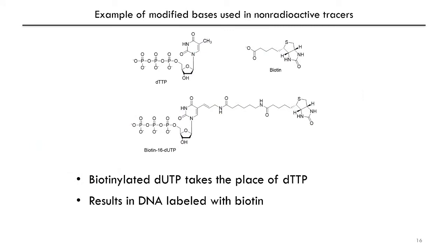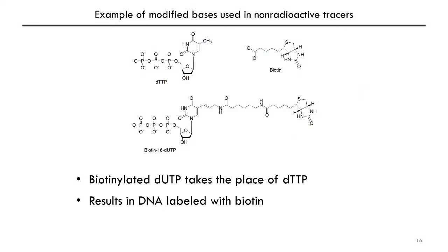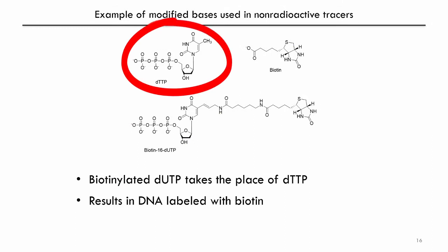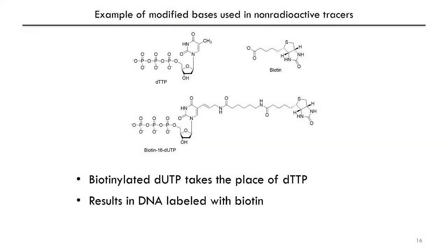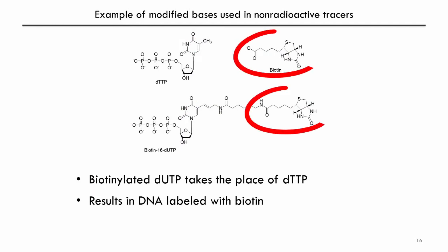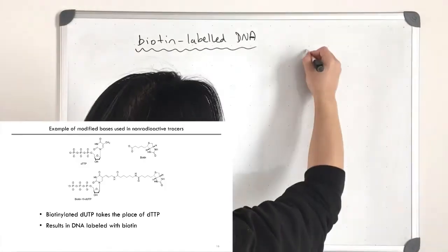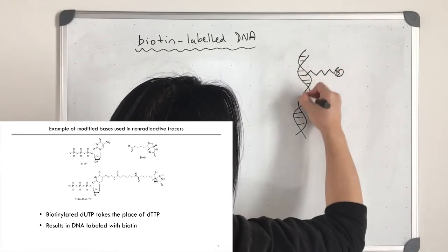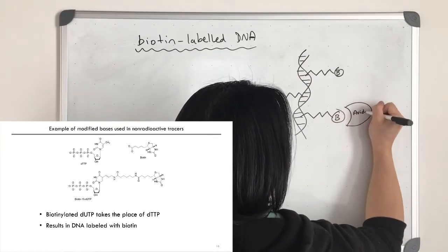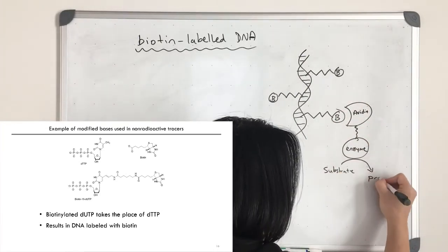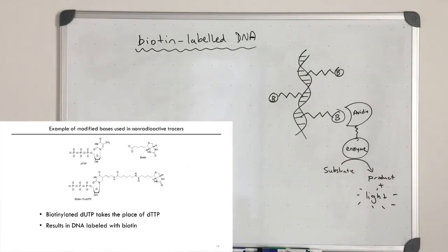This example uses biotinylated nucleotides to make a chemically labeled probe. You have a biotinylated nucleoside triphosphate replacing normal deoxythymidine triphosphate (dTTP) for the replication of DNA. This modified base still has the hydrogen bond acceptor and donor groups for normal base pairing, but attached is a biotin group. So if you PCR amplify DNA with this, you end up with a double-stranded DNA molecule with normal base pairing, but extending out from these bases you have biotin, which can interact with avidin fused to an enzyme that produces light by turning over its substrate.